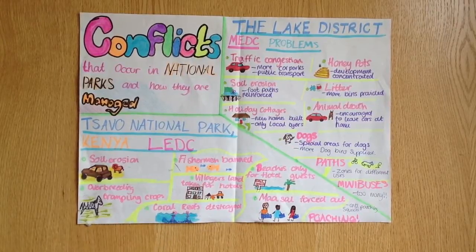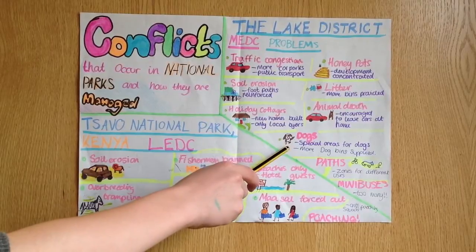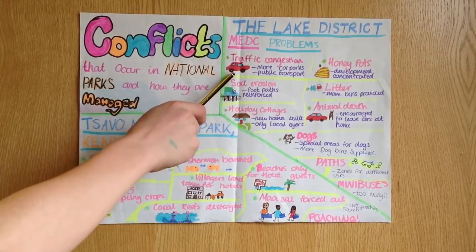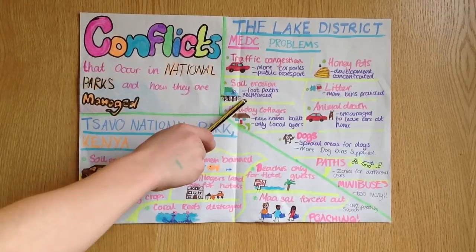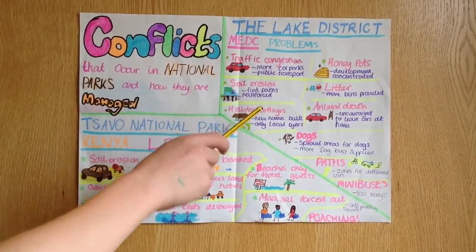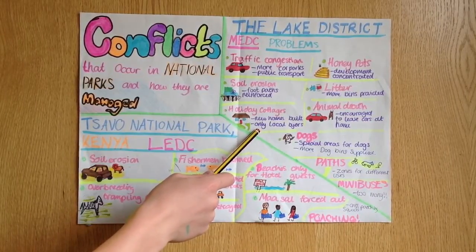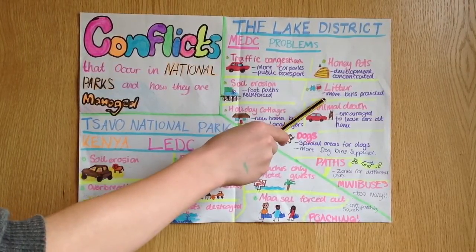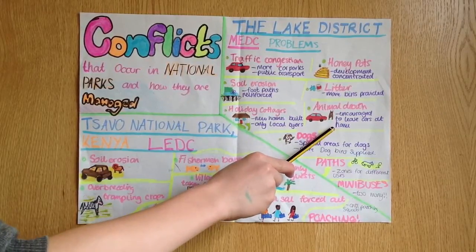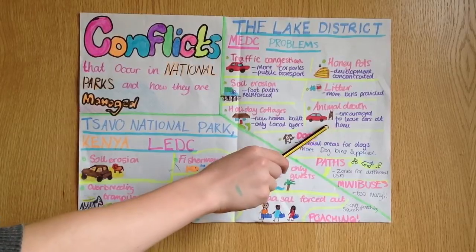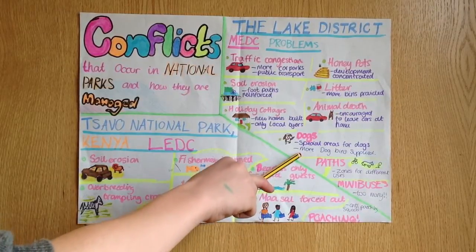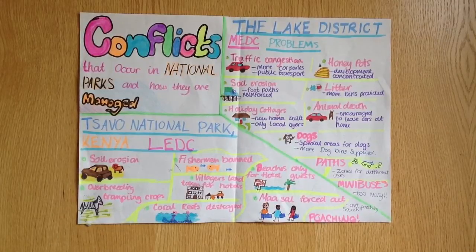These problems are being solved in various ways: areas are being zoned so activities have specialist areas, traffic congestion is managed by more car parks and encouraging public transport use, soil erosion is addressed by reinforcing footpaths, new homes are being built only for locals to address holiday cottage pricing, development is concentrated in honeypot areas, more bins are provided for litter, animals are safer as people are encouraged to use public transport, special areas and dog bins are provided for dogs, and New Forest ponies are given fluorescent collars so they can be seen at night.